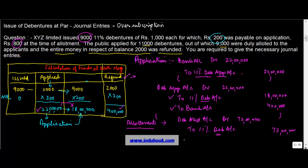And when you receive the cash, the bank, what do you do? You just debit bank account, debit. To what is this money received on account of? This is received on account of debenture allotment account. So 7,200,000 here.